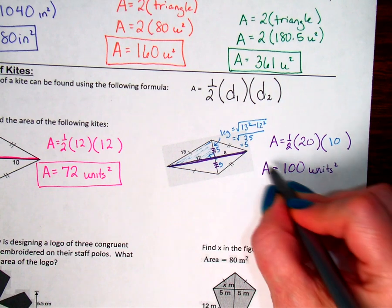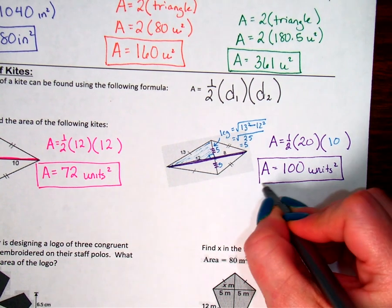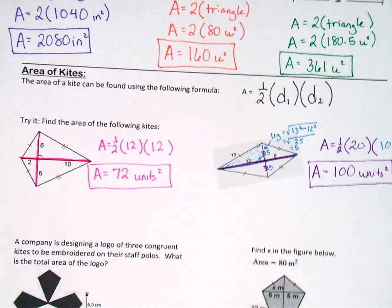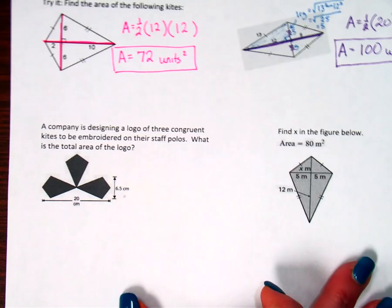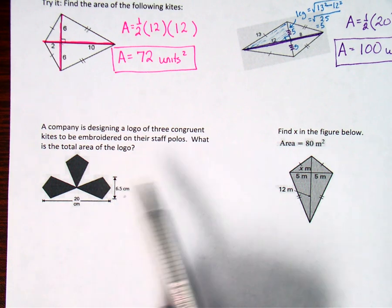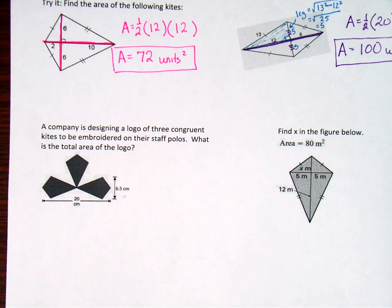All right, we will come back and figure out what the area of this company logo is. And then given an area, we're going to see if we can find a missing value. All right, come on back and we'll figure out these last two problems. Thanks for watching.